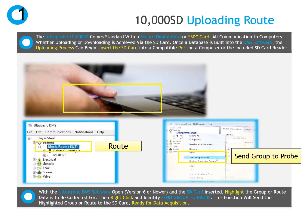All data collected on the Ultra Probe 10,000 is stored on the included SD card. Once the database is built into DMS, it can be uploaded onto an Ultra Probe. To begin uploading data, insert the SD card into the card reader on your PC or use the card reader included in the Ultra Probe case. It is recommended that the SD card be cleared of any data prior to loading a route from DMS.